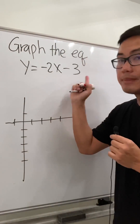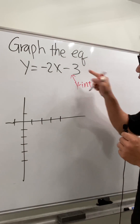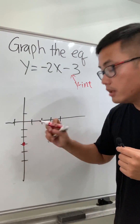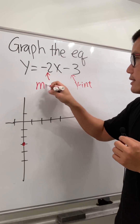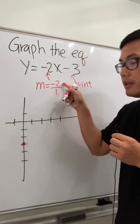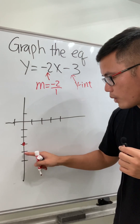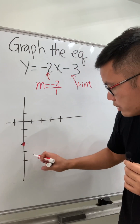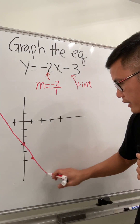Let's say we have y is equal to negative 2x minus 3. We first start with the y-intercept, which is this number right here. We have negative 3, so that tells us to go down 1, 2, 3 on the y-axis, and this will be negative 3. And then we look at the slope, which is the coefficient of x. In our case, the slope is negative 2. But let's look at this as a fraction, which will be negative 2 over 1. The negative 2 on top tells us to go down 2 times from the y-intercept, counting 1, 2. And then the 1 tells us to move to the right 1 time. And then we have the 2 points, and we can just go ahead and connect the dots with the line. And then we are done.